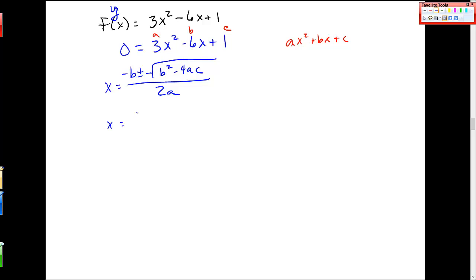x is equal to just 6 because it's negative -6, plus or minus the square root of -6² minus 4 times 3 times 1 all over 2 times 3. And so I'll get 6 plus or minus, let me plug in what's in this, so that will be 36 minus 12. So I'll get 24 here over 6.